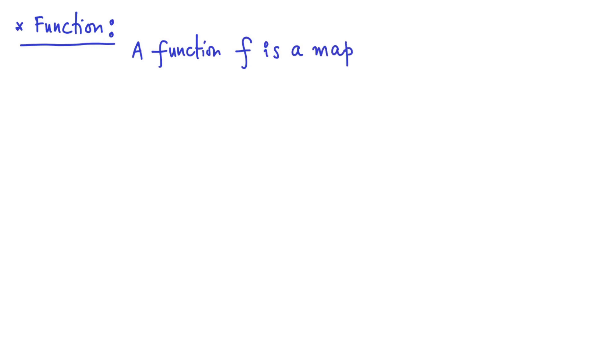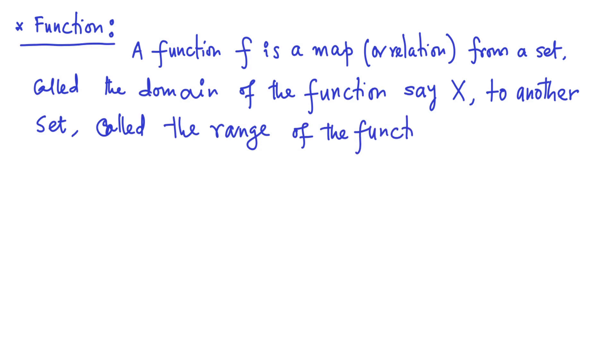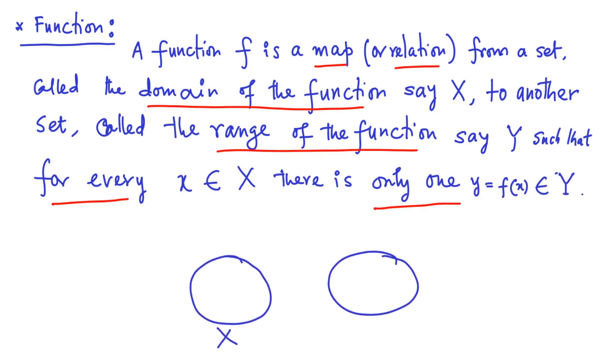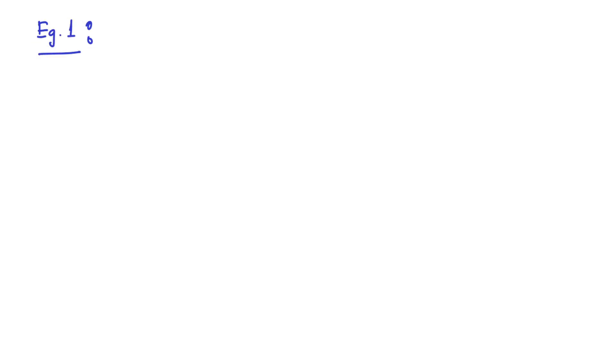A function f is a map or relation from a set called the domain of the function, say capital X, to another set called the range of the function, say capital Y, such that for every X belongs to the set capital X, there is only one Y which belongs to the set capital Y. In other words, if there is an element in the set X, which we also denote by little x, then corresponding to this value, the function F will give you only one value in the set Y, as you see in the schematic diagram, and we denote that value in the set Y by F of X.